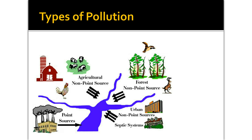The first concept is looking at the types of pollution. You can see in this picture I have point source and non-point source — that's a very big difference. Point sources are things like a factory that dumps directly into an area. Non-point sources would be like agricultural sources, such as fertilization of farm fields or runoff from farm fields. Those are considered non-point sources, as well as pollution coming from forests.